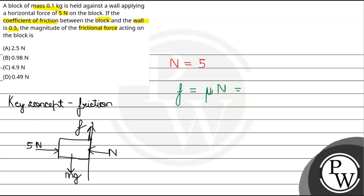μ into N, the value of μ is 0.5, N we have equal to 5. Calculate and multiply, then it is 2.5 Newton.